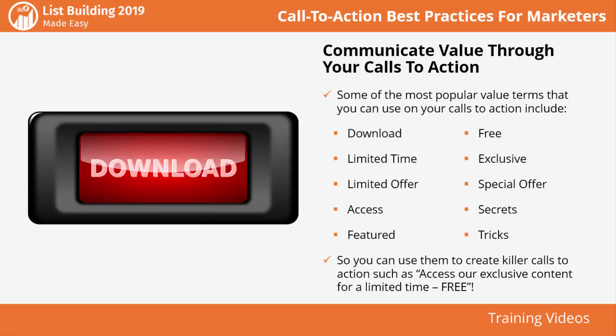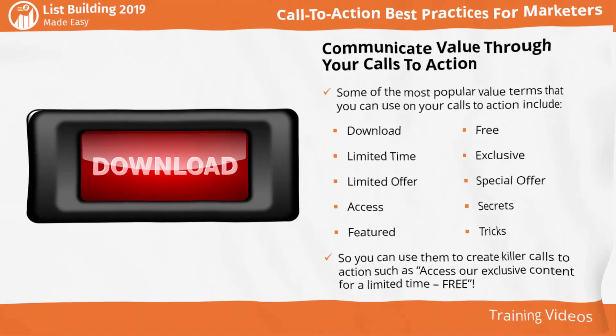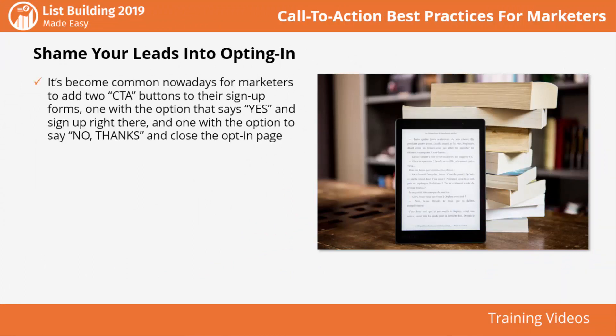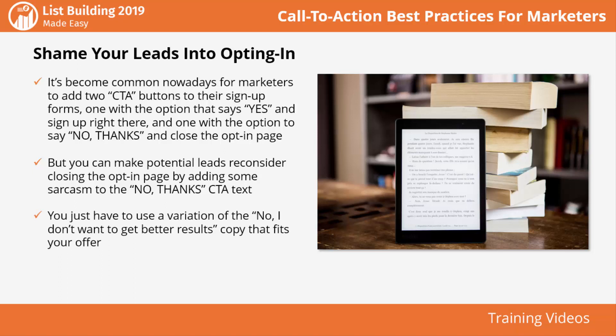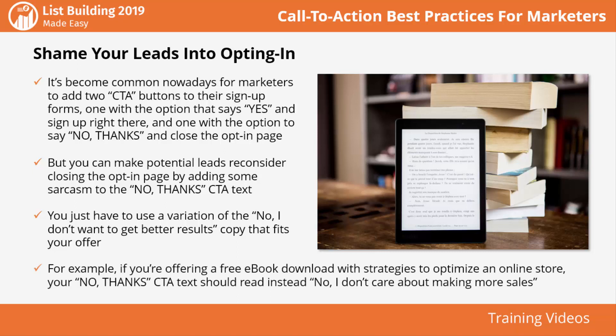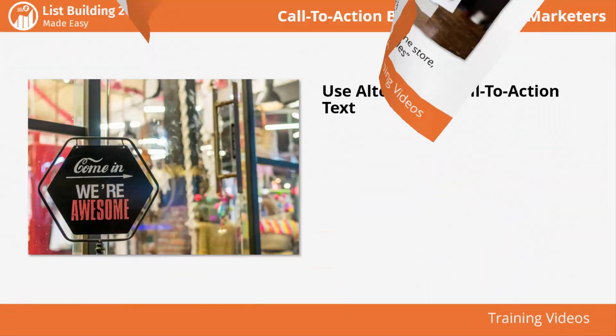You can use those value terms to create killer calls to action such as 'Access our exclusive content for a limited time free.' Shame your leads into opting in. It's become common for marketers to add two CTA buttons to their signup forms — one that says 'yes' and signs up right there, and one that says 'no thanks' to close the opt-in page. You can make potential leads reconsider by adding sarcasm to the 'no thanks' CTA text, using a variation of 'No, I don't want to get better results' copy. For example, if you're offering a free ebook with strategies to optimize an online store, the 'no thanks' text should read: 'No, I don't care about making more sales.' This simple change will help you convert three times more leads into subscribers.